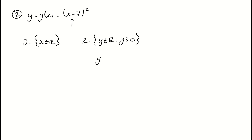If we want y to equal 0, we put in x = 7. And if we want y to tend towards the positive end of the spectrum, we put in numbers greater than 7. So the domain and range here haven't actually changed from the x² function.